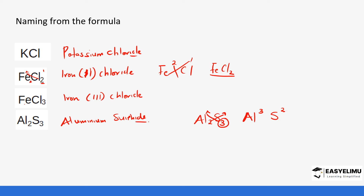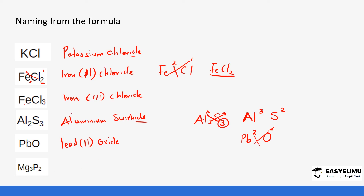Lead(II) oxide: the valency of lead is two and oxygen is two, so they cancel out completely - that is the reason it is one-one, giving PbO - lead(II) oxide. Finally, magnesium phosphide. For elements among the 20 elements, both cation and anion, we do not need to put valencies in brackets. For transitional elements it is important to put them in brackets because they can form varied charges. Note the '-ide' always comes from the anion.